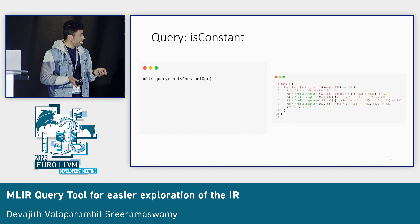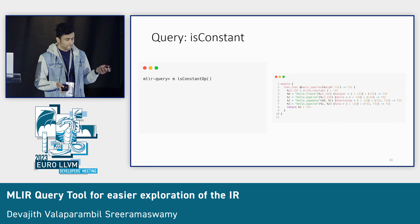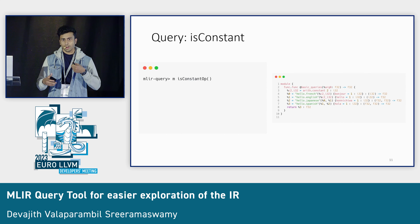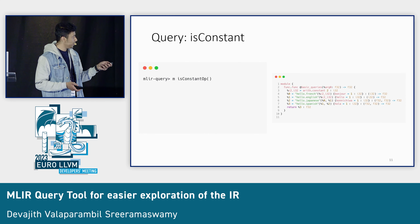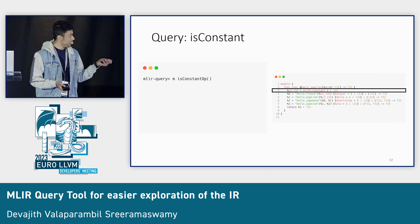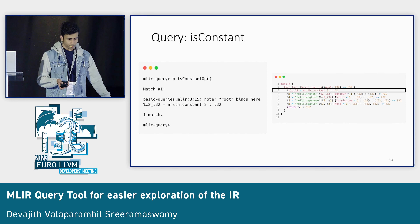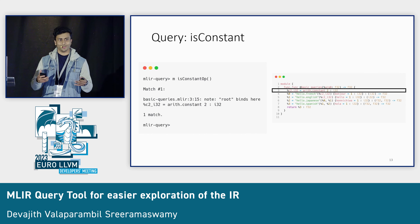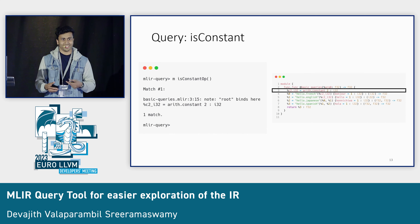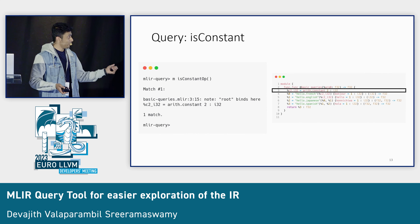Now we have a slightly different query: match isConstantOp. What this does is it matches all the operations that have a constant trait. In this file, we only have a single constant op — it's c_c_c_c_2_i32, an arith constant — and it should match that operation. At this point you might be thinking, oh, this seems easy; we don't really need a query tool for this, we can just use a text search to find all the operations and attribute names. But MLIR Query can do more.